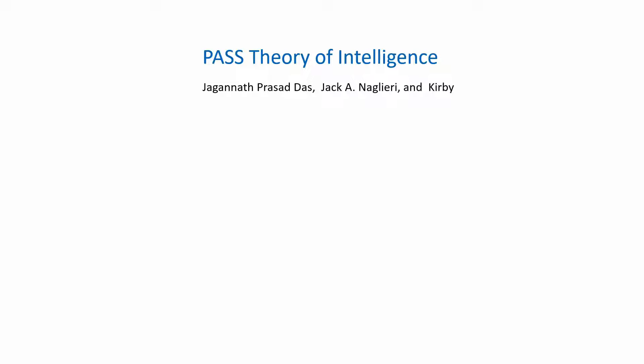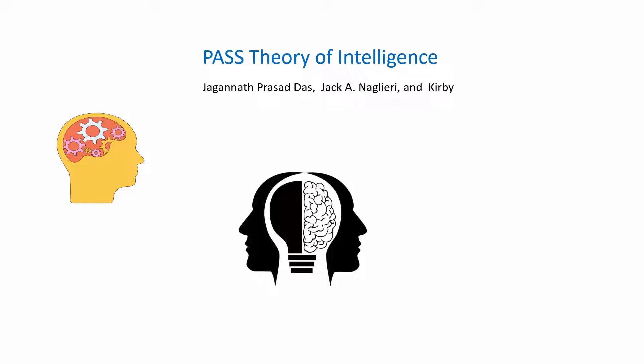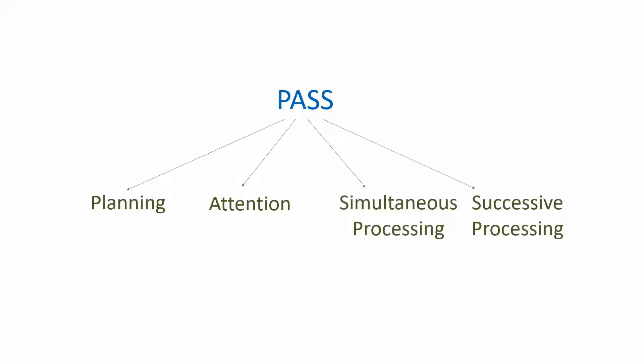It's a cognitive model that offers a unique way of understanding intelligence by focusing on the brain's cognitive processes rather than just IQ scores or general intelligence and specific abilities. The word PASS stands for four key cognitive functions: planning, attention, simultaneous processing, and successive processing. Let's break this down one by one.